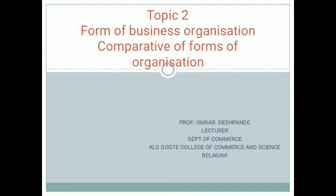Welcome you back for the business study classes. We have started with Topic 2, that is forms of business organization. We have covered all the forms of organization — starting from sole proprietorship, partnership, joint stock company, and cooperative societies. In today's class, we are going to understand the differences between all these forms using comparative forms of organization.